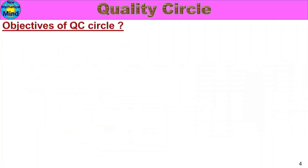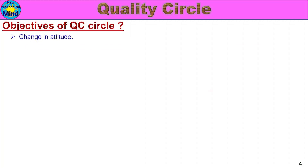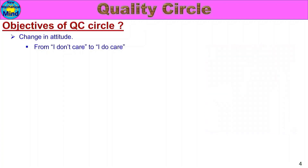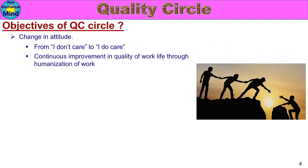Next: Objectives of QC Circle. Change in Attitude — the operator or worker will improve their mindset. For example, from 'I don't care' to 'I do care.' Continuous improvement in quality of work life through humanization of work.